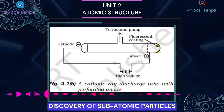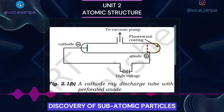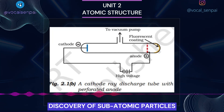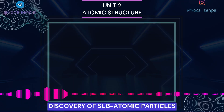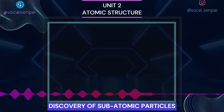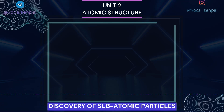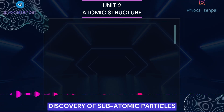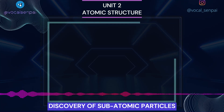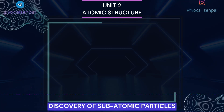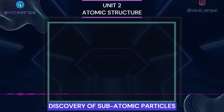The flow of current from cathode to anode was further checked by making a hole in the anode and coating the tube behind the anode with phosphorescent material zinc sulfide. When these rays, after passing through the anode, strike the zinc sulfide coating, a bright spot is developed on the coating. The results of these experiments are summarized below. The cathode rays start from cathode and move towards the anode. These rays themselves are not visible but their behavior can be observed with the help of certain fluorescent or phosphorescent materials which glow when hit by them. Television picture tubes are cathode ray tubes and television pictures result due to fluorescence on the television screen.